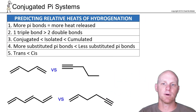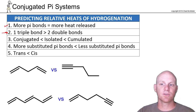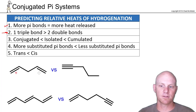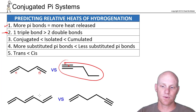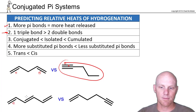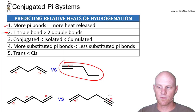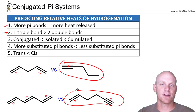After counting the number of pi bonds, the next thing we look at is that a triple bond actually releases more energy than two separate double bonds. So if we've got two pi bonds both in alkenes versus a triple bond which also has two pi bonds, the triple bond is going to be greater — it's higher energy and therefore more exothermic when you hydrogenate it. So if we have three pi bonds in one molecule and three in another, but two of those are in one triple bond, this triple bond is worth more than two of the double bonds, so it will have a higher heat of hydrogenation.